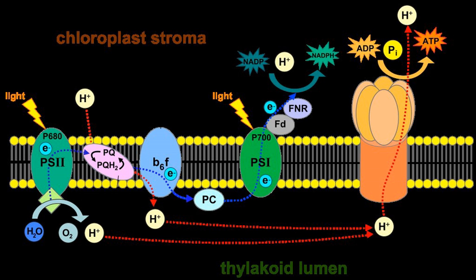Cyclic photophosphorylation is important to create ATP and maintain NADPH in the right proportion for the light-independent reactions. The net reaction of all light-dependent reactions in oxygenic photosynthesis is: 2H₂O + 2NADP⁺ + 3ADP + 3Pi → O₂ + 2NADPH + 3ATP. The two photosystems are protein complexes that absorb photons and use this energy to create a photosynthetic electron transport chain.